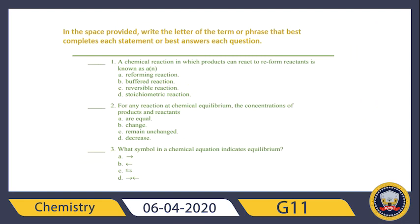We talked about chemical equilibrium and we said that every reaction can proceed in two directions: forward direction and reverse direction. All reactions are reversible under certain conditions. Chemical equilibrium is when the rate of the forward reaction equals the rate of the reverse reaction, and at the same time the concentration of reactants and products remains constant.